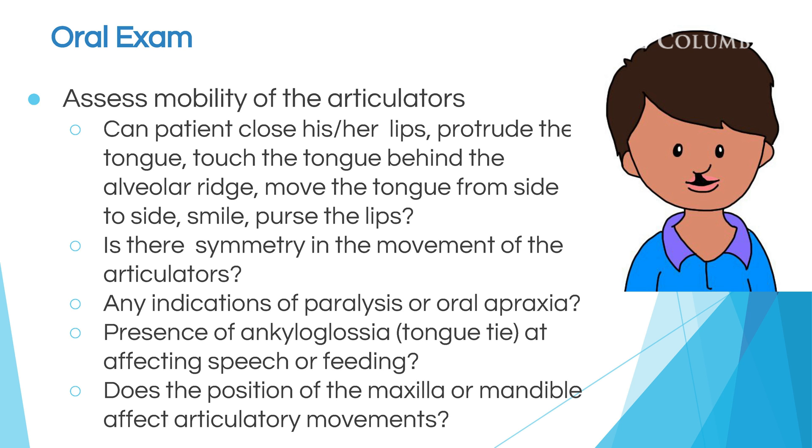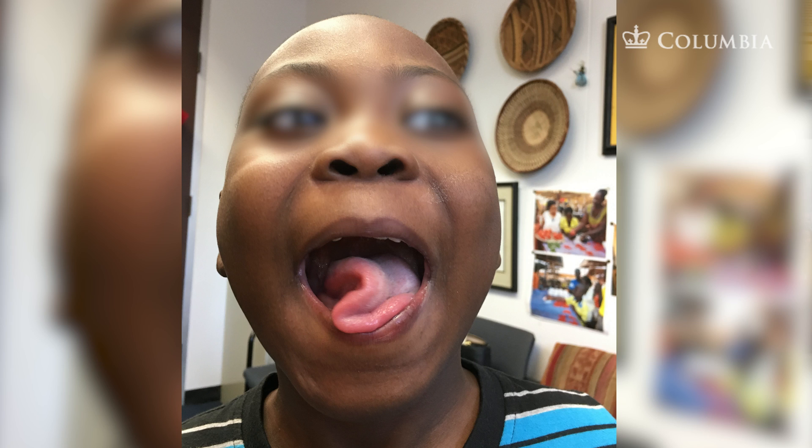Next, you'll also want to check the bottom of their tongue. Do they have ankyloglossia? That's a frenulum — the tissue on the bottom of your tongue that attaches your tongue to your mouth. Is it very short? If it's very short, it would be very hard for them to move their tongue up. You need that tongue to move up for the l and the th sound, so if it's a short frenulum, it will affect those sounds.